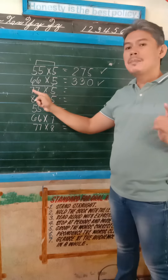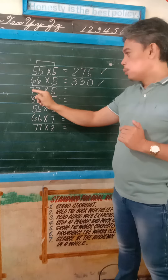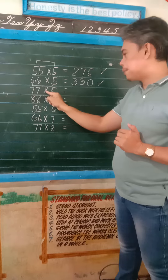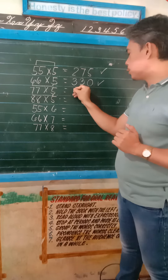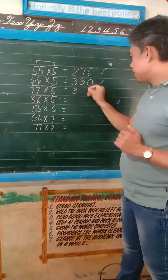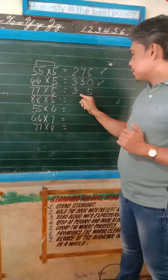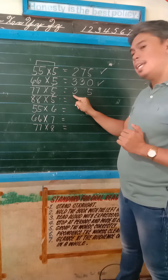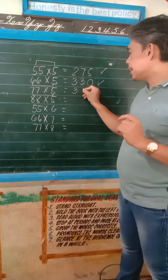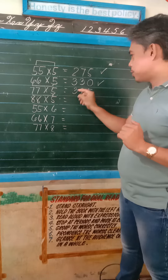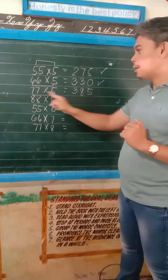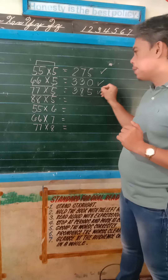77 times 5. Multiply 7 and 5. 7 times 5 is equal to 35. Write 3 and 5. Add 3 and 5, that is equal to 8. Write 8 here between 3 and 5. So 385 is the product of 77 and 5.